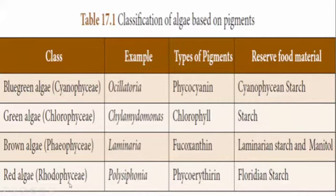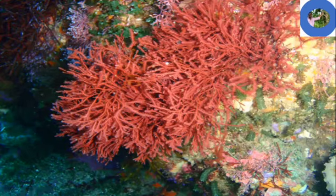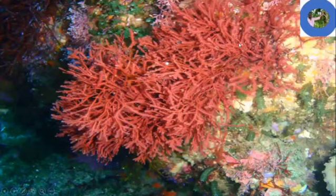Red algae belong to Rhodophyceae. An example is Polysiphonia. The type of pigment present is phycoerythrin. The reserve food material is floridean starch.